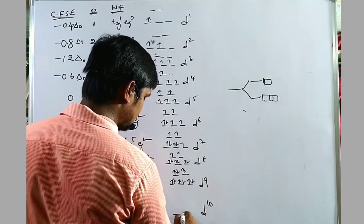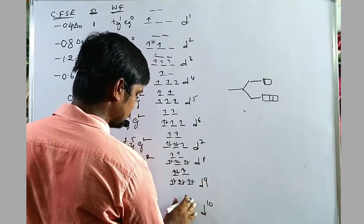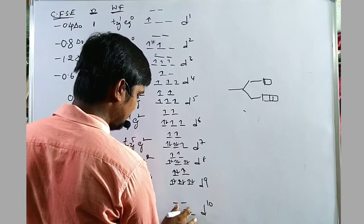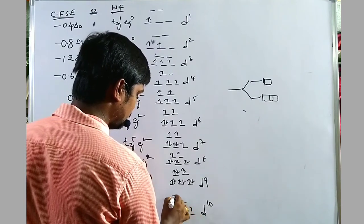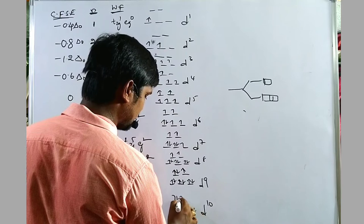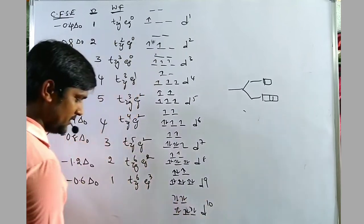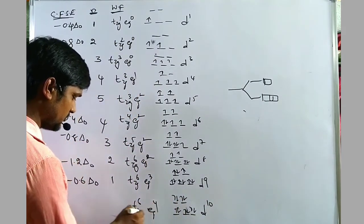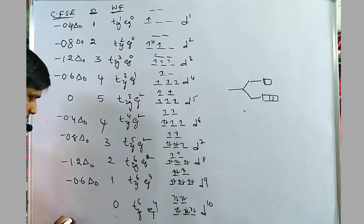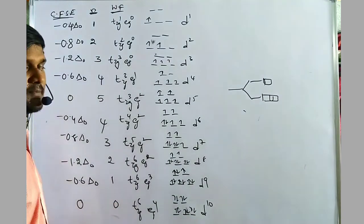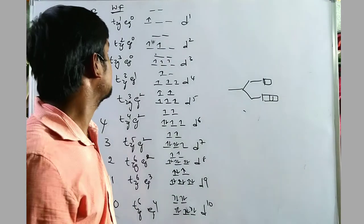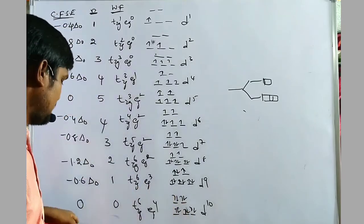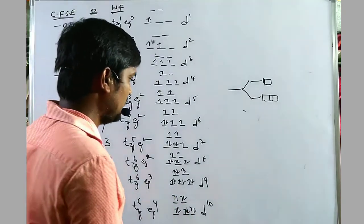For D10: configuration T2G⁶EG⁴, all electrons are completely paired, no unpaired electrons remain. Therefore the Crystal Field Stabilization Energy value is equal to zero.